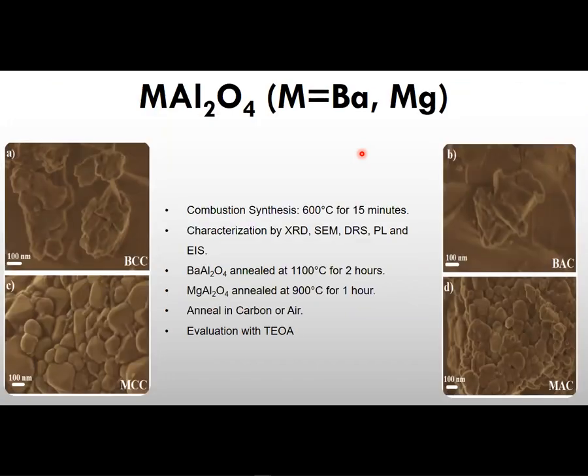The other type of material that we prepared was the alkaline metal-based aluminate, in this case being barium aluminate or magnesium aluminate, which were prepared by combustion synthesis at 600 degrees Celsius for 15 minutes to produce white powders that were then annealed at distinct temperatures under distinct heat treatment atmospheres, that being carbon or air.